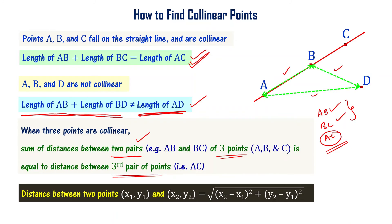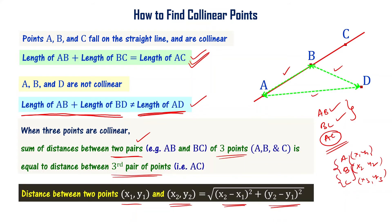In coordinate geometry, the distance between two points formula is: if A is (x1, y1) and B is (x2, y2), the distance between those points is the square root of (x2 minus x1) whole square plus (y2 minus y1) whole square. So for points A, B, C with coordinates (x1, y1), (x2, y2), (x3, y3), find the distances between them, check the equality criteria — if it holds, those points are collinear; if not, they are not collinear.